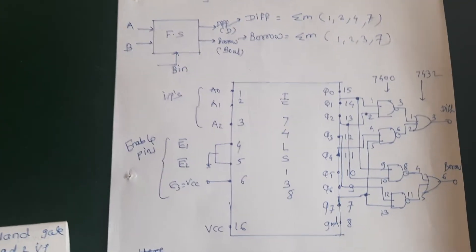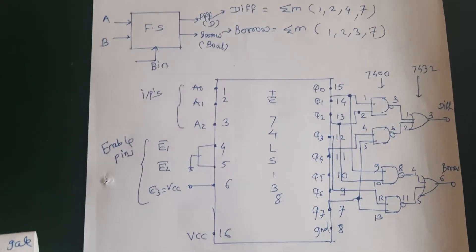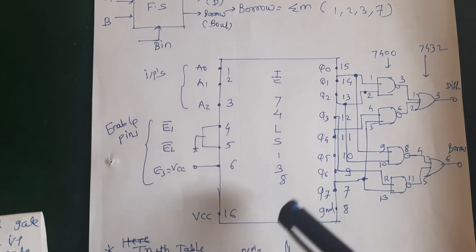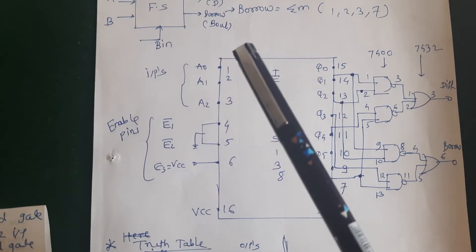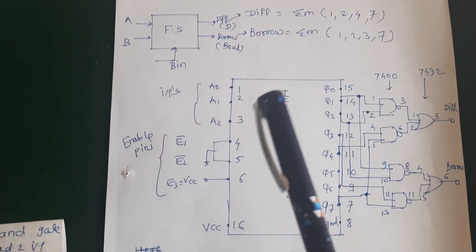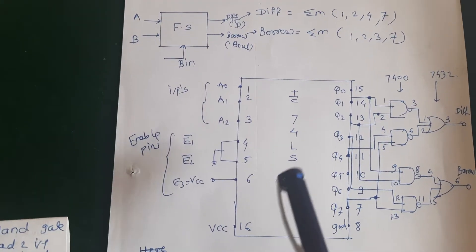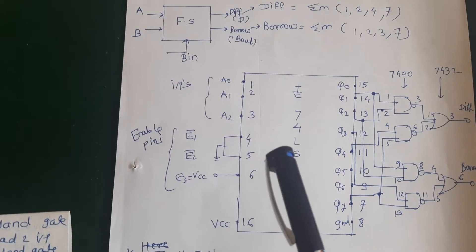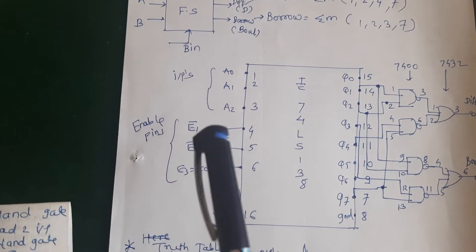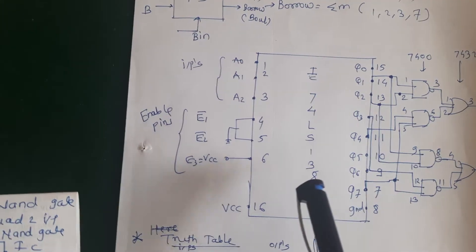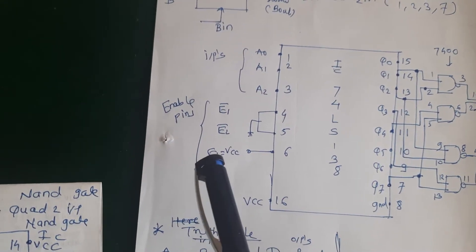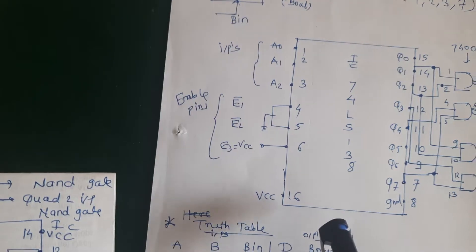This is the pin configuration of the full subtractor using IC74LS138. Pins 1, 2, 3 are the inputs: A, B and borrow in. Then 4, 5, 6 are the enable pins. Pins 4 and 5 are active low, meaning both are connected to ground. Then pin number 6, E3, it is active high, that is connected to VCC.